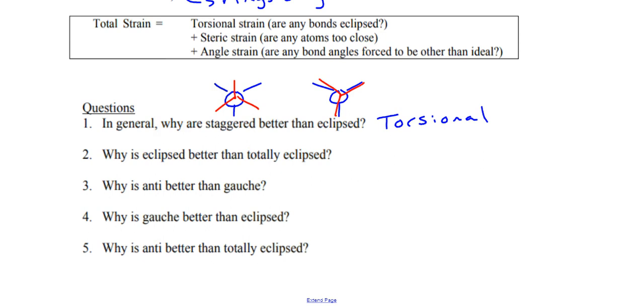Why is eclipsed better than total eclipsed? Well, the difference between the two, we take a look at this, let's just call this a CH3. And then let's just say I have a CH3, but it's sitting over here. These other ones are H's. And the other one, if you have another CH3 right in front of it, this would be the total eclipse. Well, the difference between the two is you have compounds too close to each other. So that is steric.